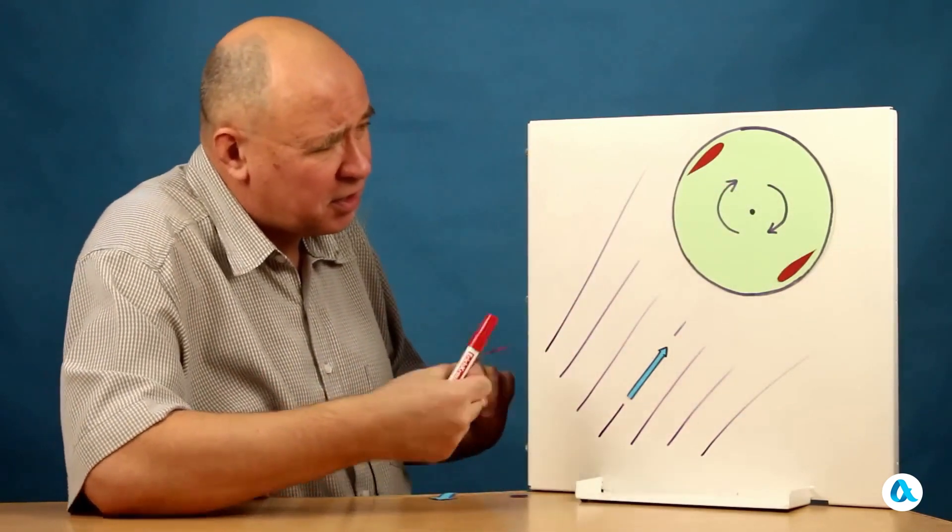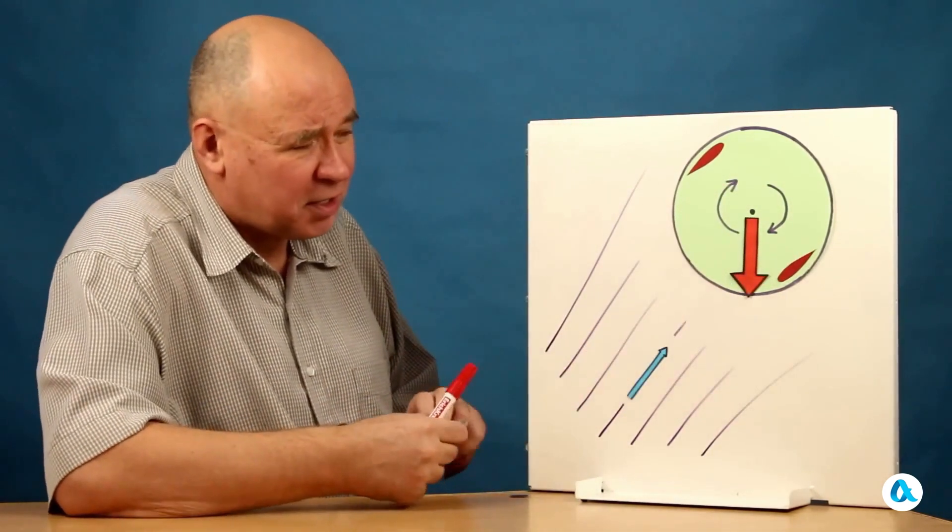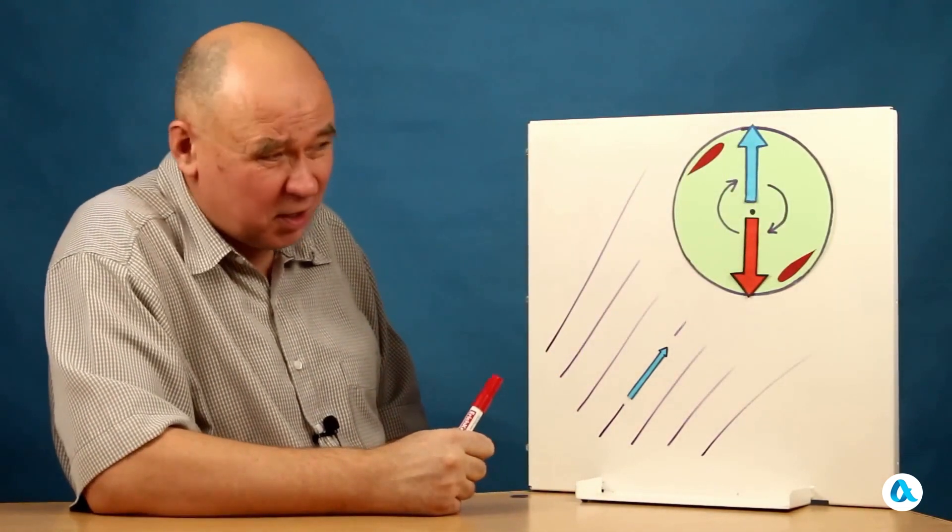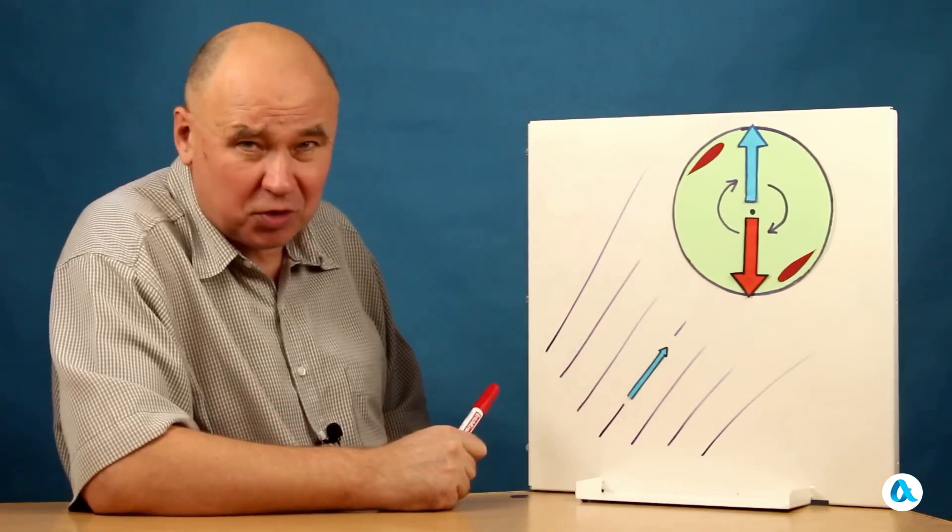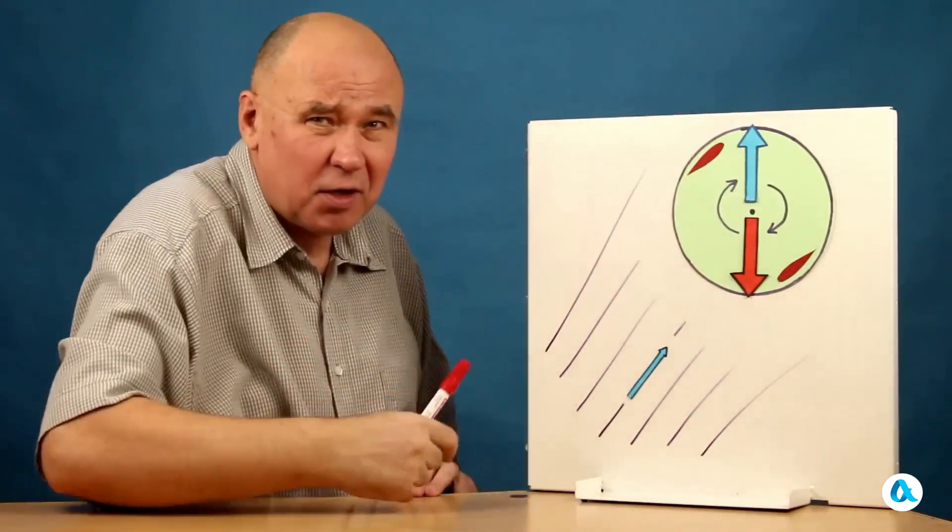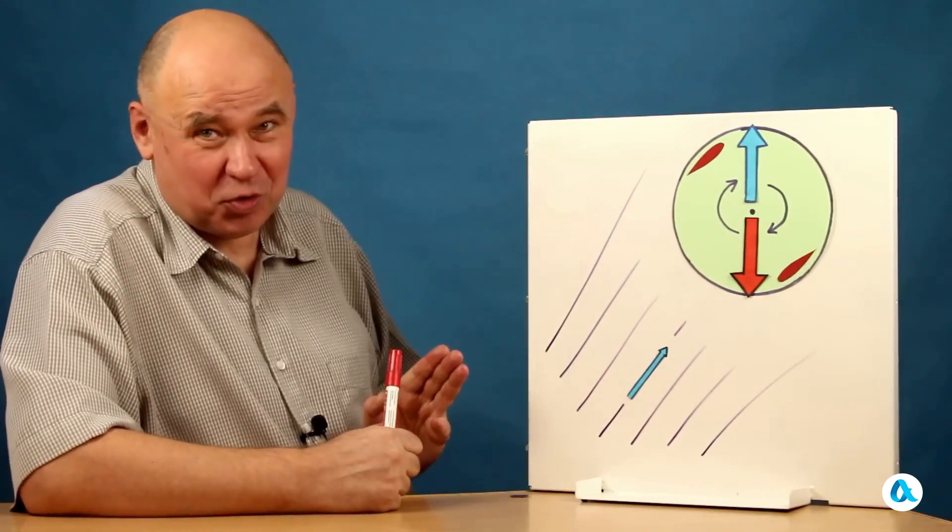Let's arrange the forces. This is the force of gravity. It is directed downward. This aerodynamic force balances the force of gravity, and therefore it is directed upwards. Well, this flow, among other things, maintains the rotation of the rotor at a constant angular speed.